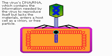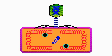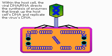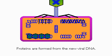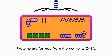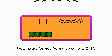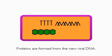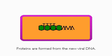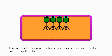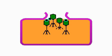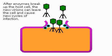Within the host cell, the viral nucleic acid directs the synthesis of enzymes that will break up the host cell's nucleic acid, which will then be used for reproducing the virus. New proteins formed by the virus join to form new virions. As the enzymes break up the host cell, the virions are released to start new cycles of infection.